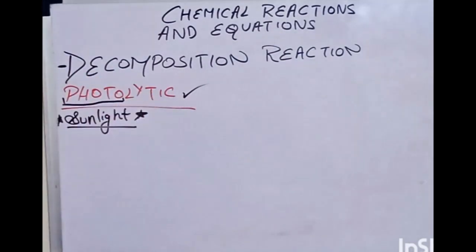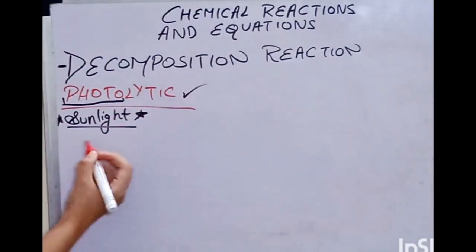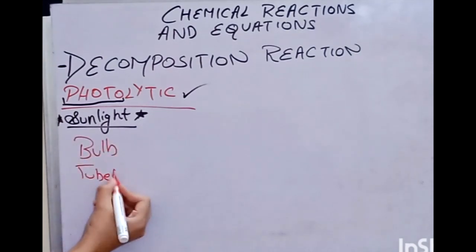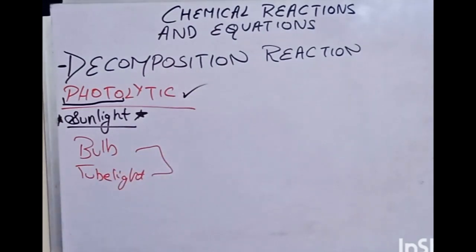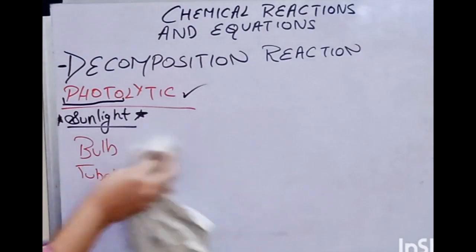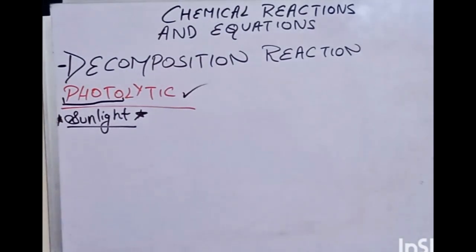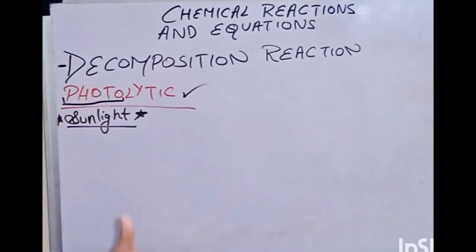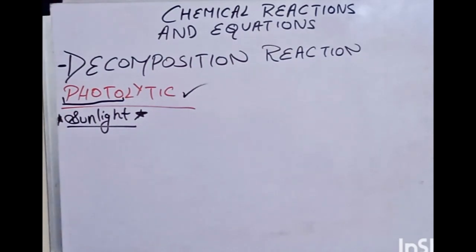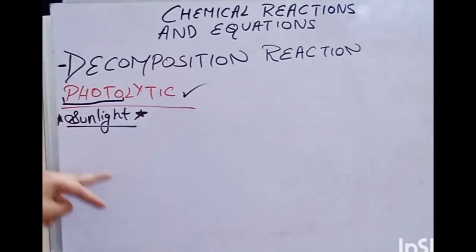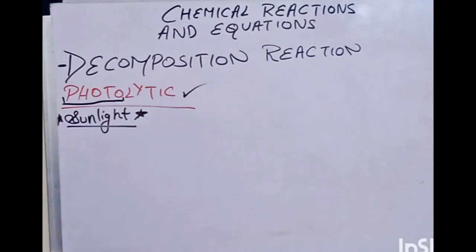You might wonder: if it's about light, why only sunlight? Why not a bulb, tube light, or torch? The answer is that sunlight has very small packets of particles that contain both light and heat. Tube lights and bulbs are artificial sources, and secondly, the amount of heat they give is not sufficient. So always remember: photolytic means sunlight only — no other source.